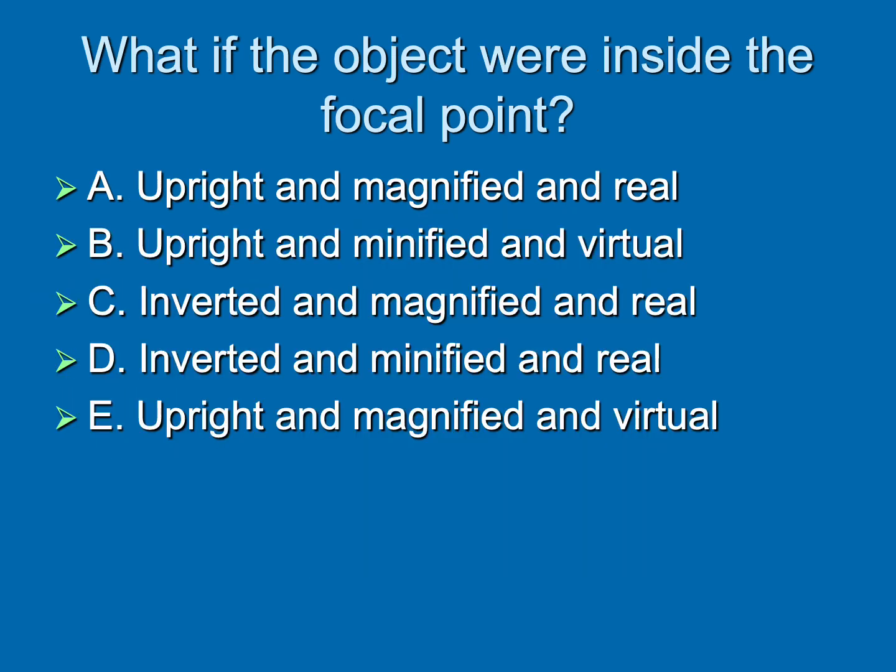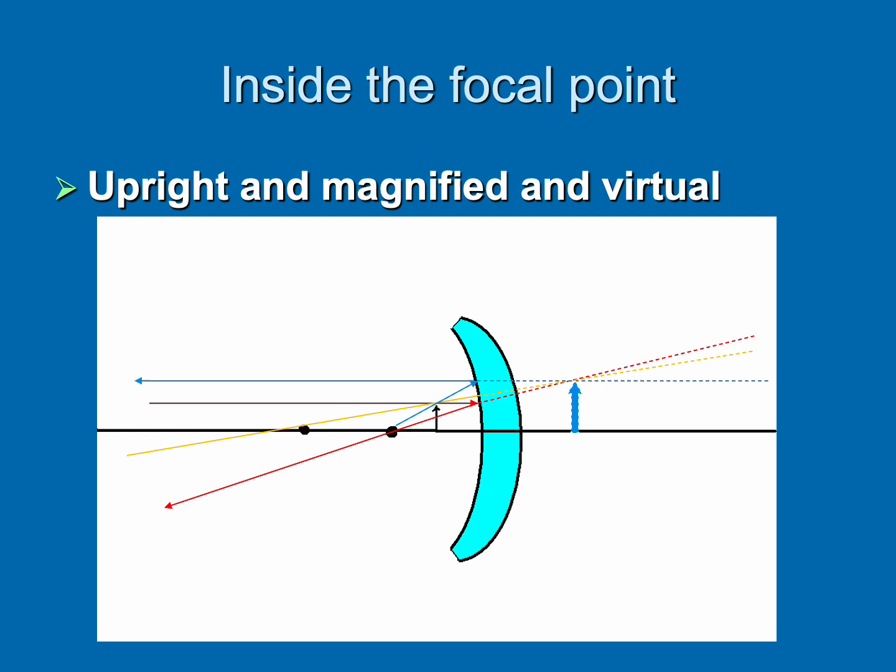Now what do you think would happen if I put that object inside the focal point? We've been outside the center of curvature, then we were in between the two points, and there's really only one place left to go, and that's inside both points. Here you can see it gives you a virtual image, which is magnified and upright. But you don't have to know that on the concave mirror. What you have to do is sketch them out, and it will always give you the correct answer. I advise that over trying to remember this stuff, all you have to remember are how to draw the three rays.